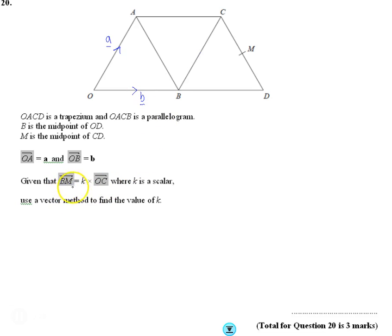We need to show that if we multiply OAC by something, it's the same as BM, where k is a scalar. We need to work out the value of k. So first thing's first, let's work out the different bits.